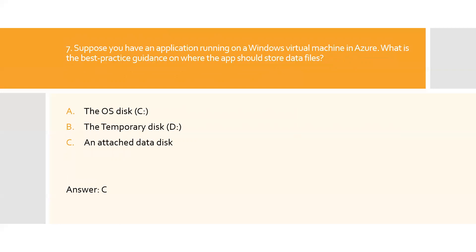Question seven: Suppose you have an application running on a Windows virtual machine in Azure. What is the best practice guidance on where the app should store data files? A) The OS disk, B) The temporary disk, C) An attached data disk. Option C is the right answer. Dedicated data disks are generally considered the best place to store application data files. They can be larger than the OS disk, and you can optimize them for the cost and performance characteristics appropriate for your data.